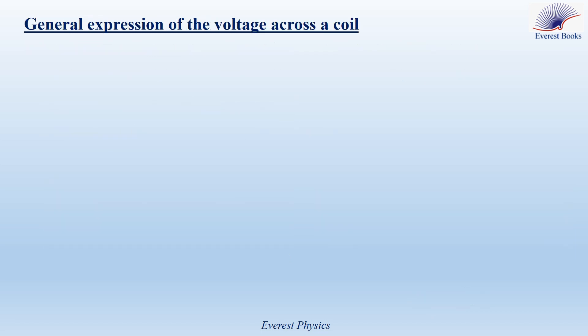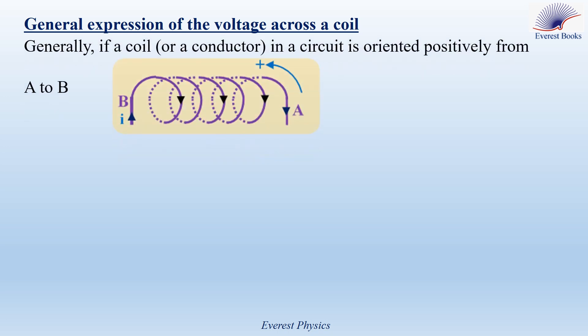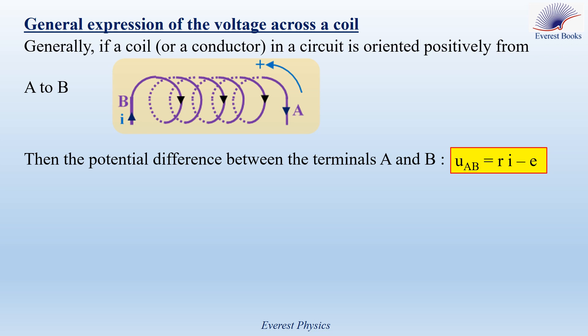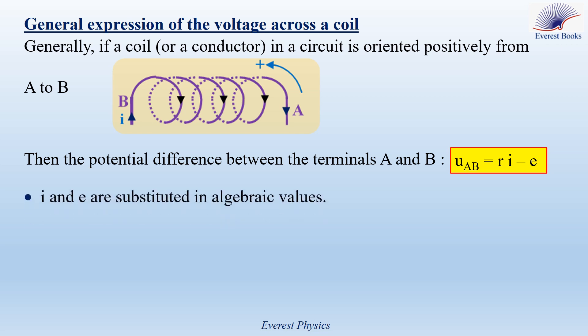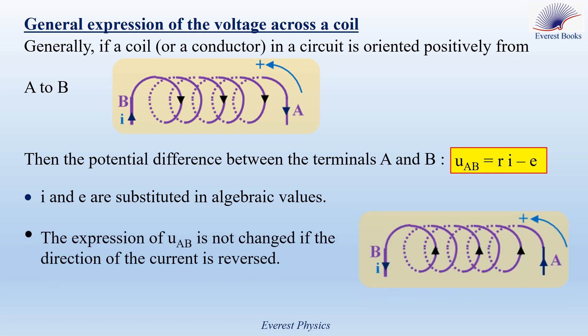General expression of the voltage across a coil. Generally, if a coil or a conductor in a circuit is oriented positively from A to B, then the potential difference between A and B is given by U_AB = RI − E, where R is the internal resistance of the coil. I and E are substituted as algebraic values, meaning E and I could both be positive or both be negative.